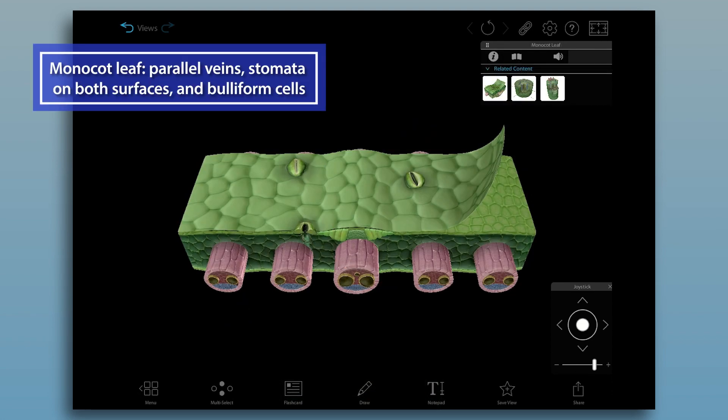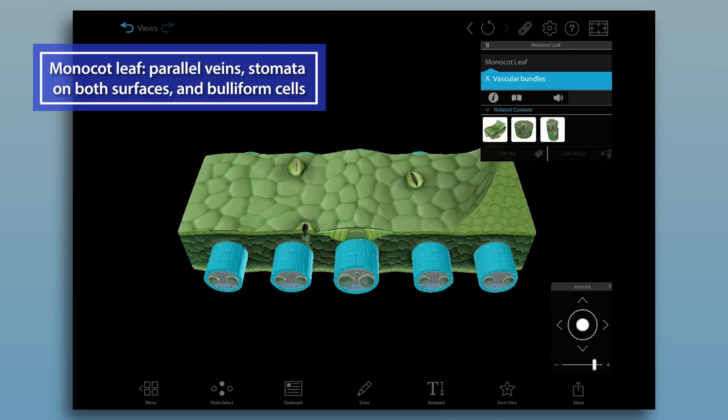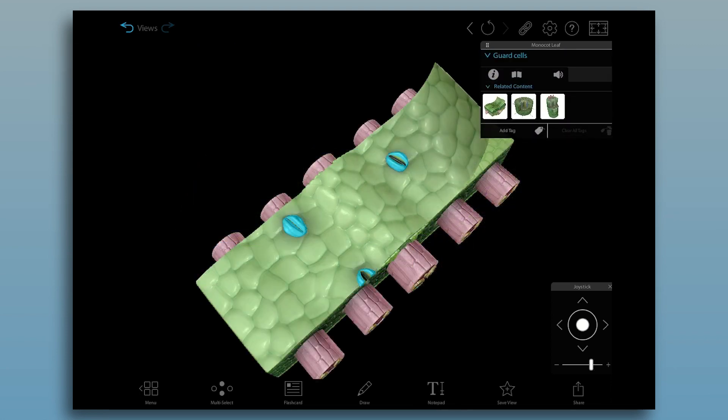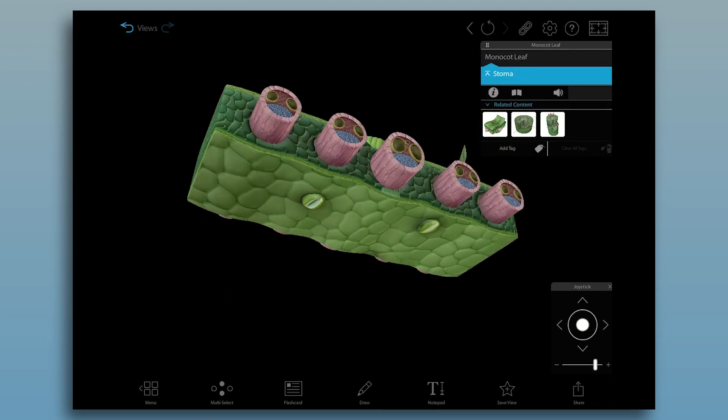In monocot leaves, the vascular bundles form parallel veins. In addition, there are stomata on both the upper and lower surfaces of the leaf.